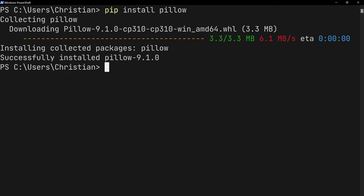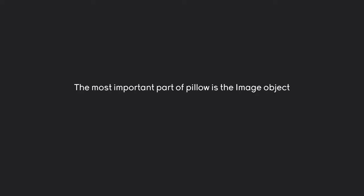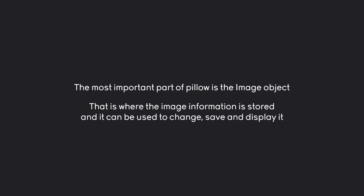Let's start with the basics of Pillow. There's one really important concept and that is the image object. This is basically where all of the actual image information is stored, and this is what we use to change, save, and display it. For this entire video we are always going to have some kind of image object — this is what we are actually working with.